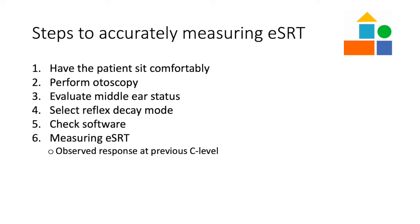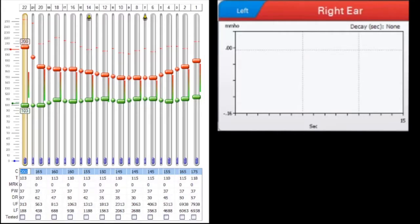Once a response is no longer observed, increase the C level until a response is again observed. Here is an example of a response being observed on the first presentation, the clinician decreasing the C level, and presenting again. Once a response is no longer observed, the C level is increased until a response is once again observed.